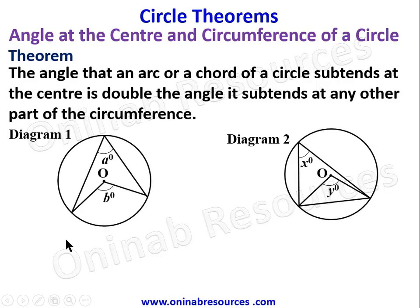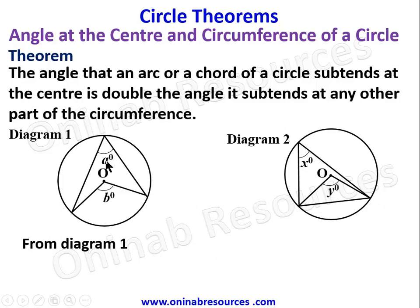Looking at diagram one, the arc of this circle is a minor arc. This arc is subtended by angle b degrees at the center of the circle. The corresponding angle at the circumference is a degrees. By this theorem, b equals 2a — the angle at the center is double the angle at the circumference.